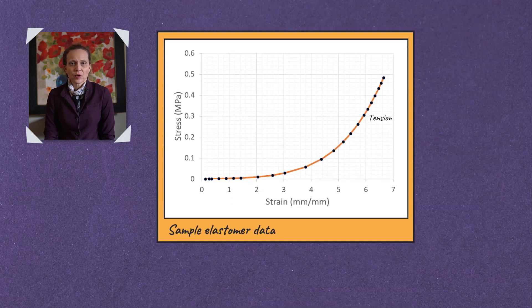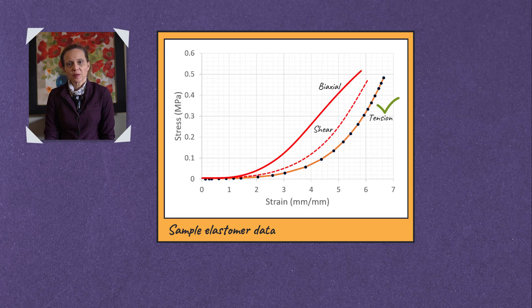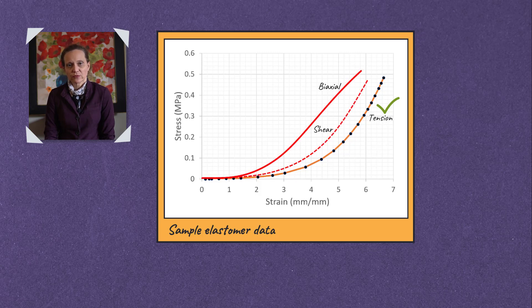It's worth noting that in practice one may calibrate the hyperelastic model using test data in only one of these three modes of deformation. In such cases, the model response may be reliable in only that mode of deformation. Therefore, while it's possible to calibrate these modes using data from only one mode of deformation, it is highly recommended to use data from multiple or all three modes of deformation.